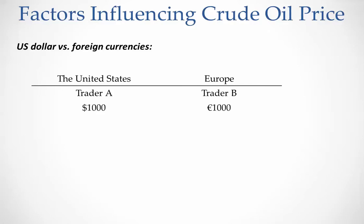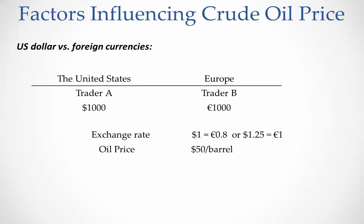Now let's consider the case where the US dollar loses its value. Same two traders: trader A is in the United States with $1,000, and trader B is in the EU with €1,000. Now the US dollar has lost its value — one dollar is equivalent to 0.8 euros, or with one euro you can get $1.25. The crude oil price is still $50 per barrel.